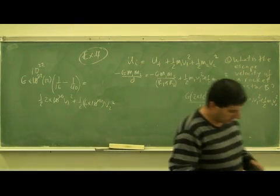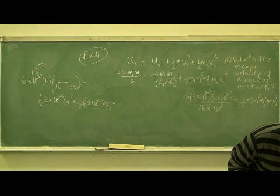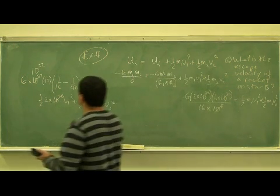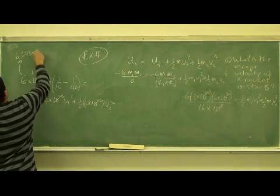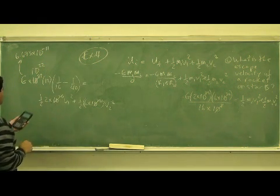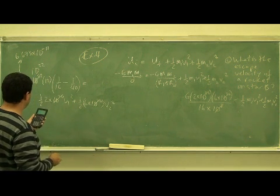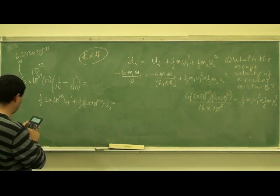And G is 6.673 times 10 to the minus 11. So we got this. Now we multiply this by 6.673 times 10 to the minus 11, we multiplied it by 12, we multiplied it by 10 to the 22.